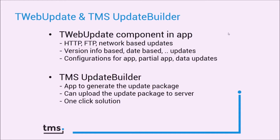The criteria for determining if there is a new version of the application available can be based on the application version information, a date, a file size, a checksum of a file, or you can define your own custom criteria.